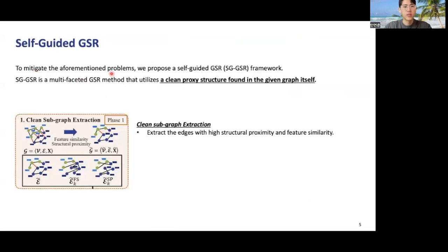To mitigate the aforementioned problems, we propose a self-guided GSR framework that utilizes a clean proxy structure found in the given graph itself. To extract this clean subgraph, we find and extract edges with high structural proximity and feature similarity, which are considered confidently clean edges.